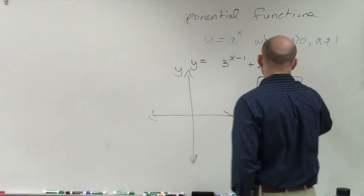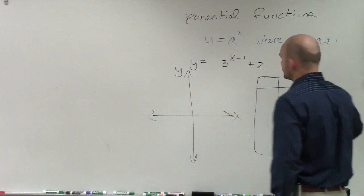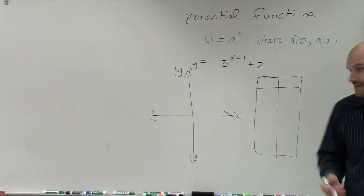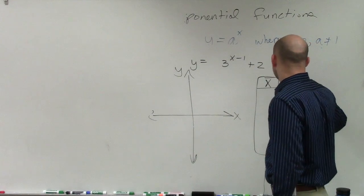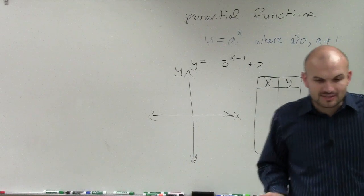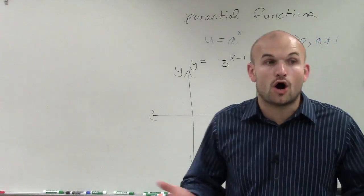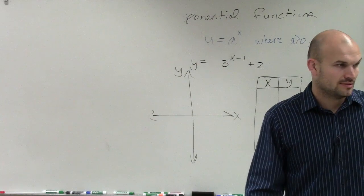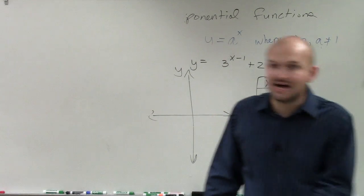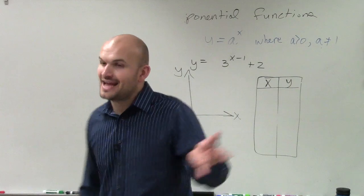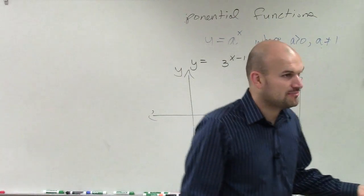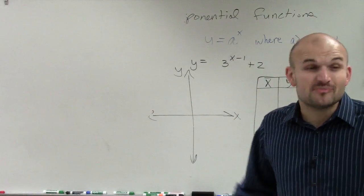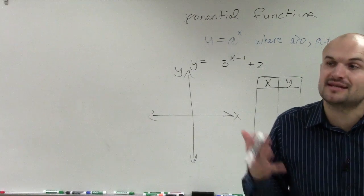And then what I'm going to do is I'm going to create a table of values. Now, the nice thing about creating a table of values is you get to create your table of values. We have an x and a y-coordinate. But we talked about the domain of logarithmic is all real numbers. That means you can pick any number you want to for x. Negative 100, positive 15, negative 2 thirds, positive 1 million. You can pick any number you want to, because the domain is all real numbers.